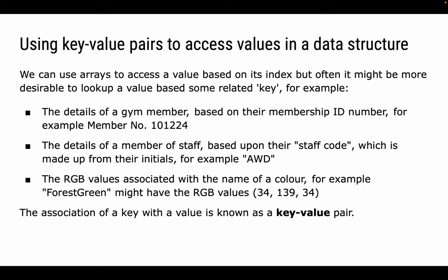Or it might be that we're looking up an association between a friendly name and some other values. For example, there's a whole set of colours which are recognised HTML colour codes, all associated with specific RGB values. Forest green is associated with 34 for red, 139 for green, and 34 again for blue. So each of these is an example of a key-value pair, where the key is 'forest green' and the paired value is (34, 139, 34).